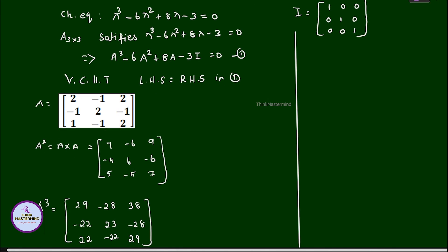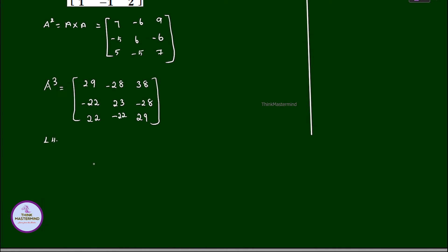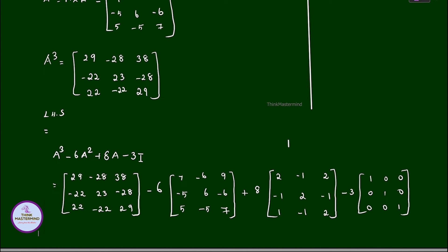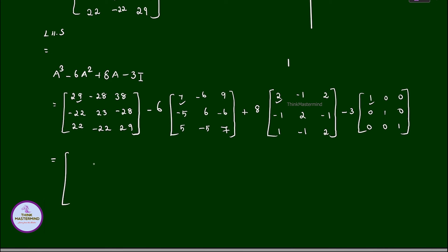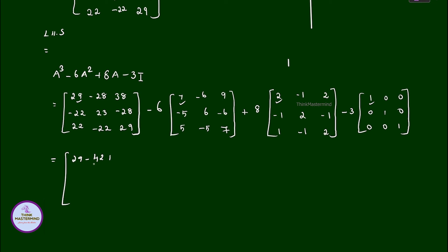It is easy to calculate A squared and A cubed this way. From the left-hand side, taking the first element: 29 minus 6 times 7 plus 8 times 2 minus 3 times 1, that is 29 minus 42 plus 16 minus 3, which equals 45 minus 45 equals 0. Similarly, all entries become 0. Hence, we have verified the Cayley-Hamilton theorem — the left-hand side equals the right-hand side.